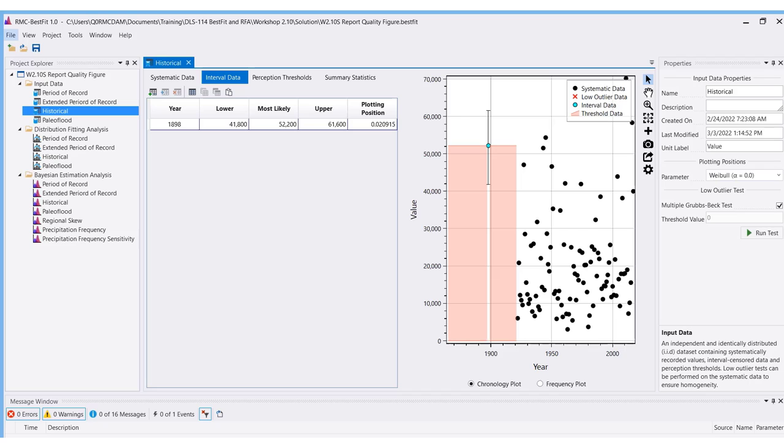Before we get started putting the data into RMC Best Fit, I want to make you aware of some of the requirements of the interval data. The year must be unique. The year must be between negative 100,000 and positive 100,000. The year cannot overlap with any data in the systematic data table. The flow values must be non-negative. The lower bound value must be less than the most likely value, and the upper bound value must be greater than the most likely value.